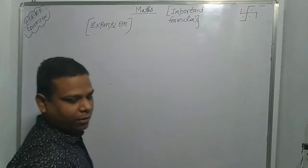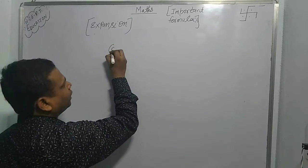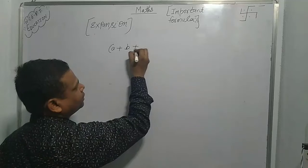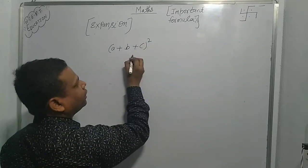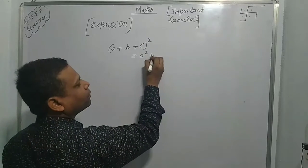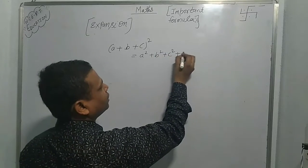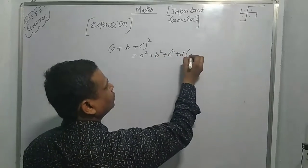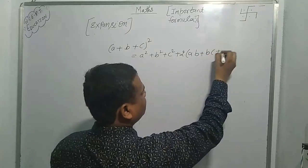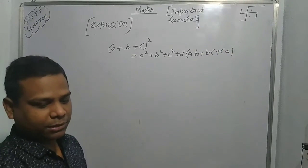The next formula is a plus b plus c whole square. A plus b plus c whole square is equal to a squared plus b squared plus c squared plus 2ab plus 2bc plus 2ca.